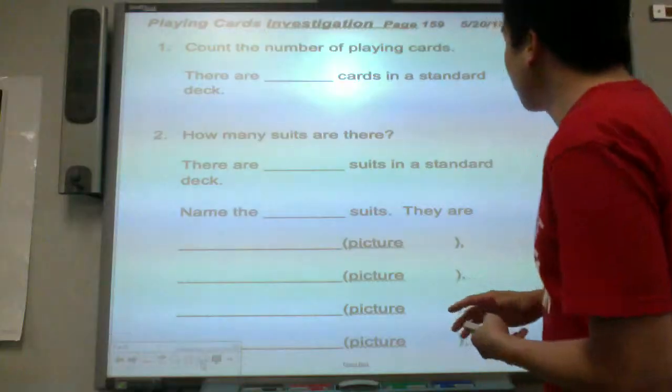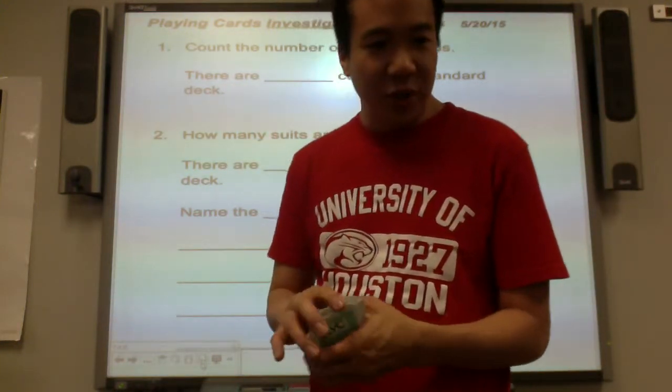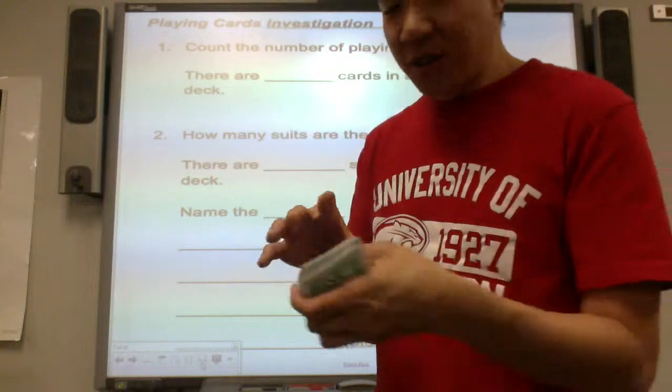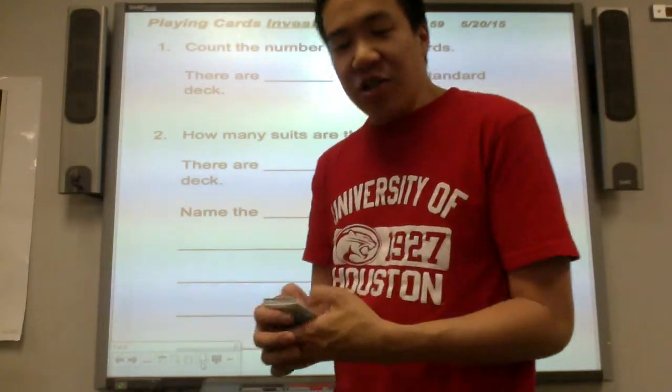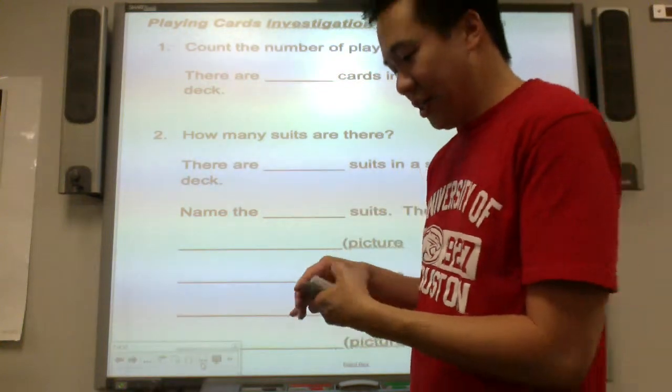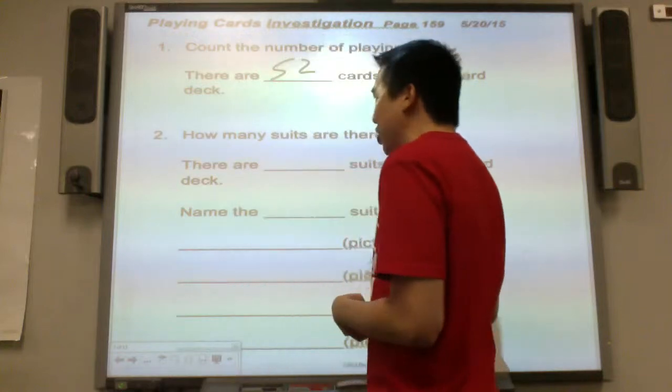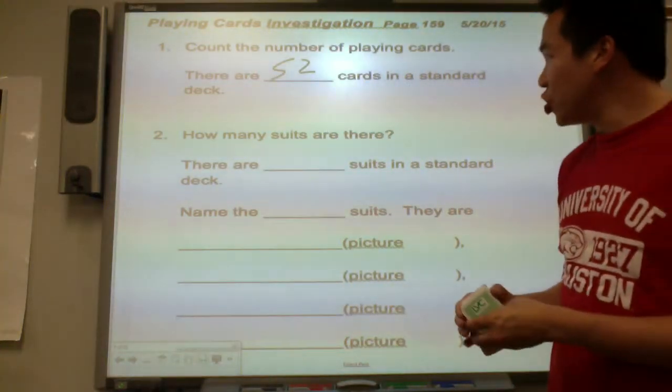Count the number of playing cards. So if I count, hey, there's no jokers in here. That's weird. Where are my jokers? That's good, because I don't need any jokers here. So if I count the number of playing cards, these come from the Las Vegas Club Hotel and Casino.